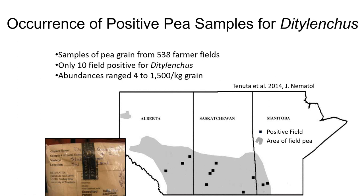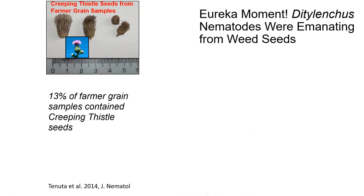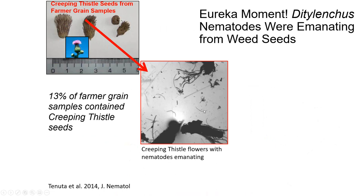I concluded it was just generally within the pea growing area that this nematode was being found. I had hoped it would be something in the rotation or soils or climate, but that didn't seem to be the case. But my students did notice something: when they found thistle heads in grain samples from farmers, they found the nematode. As soon as they put a thistle head into water, after a few minutes, live nematodes would start coming out of the thistle head. That's where we said: maybe it's not the peas, but rather the thistle that this nematode is actually feeding on.